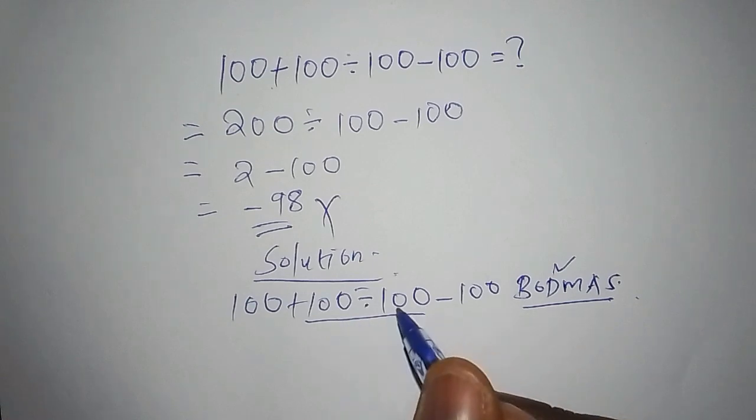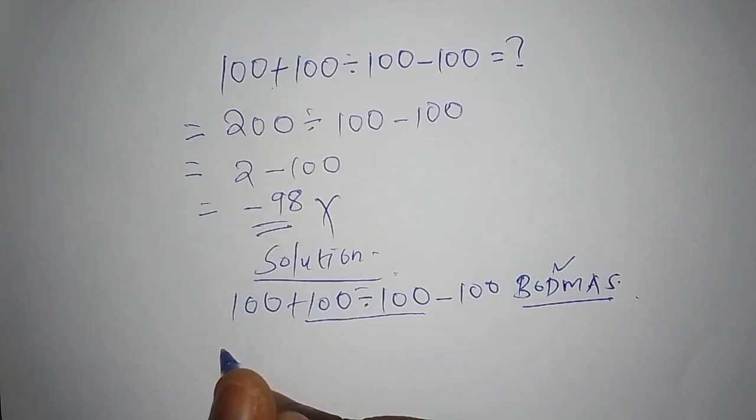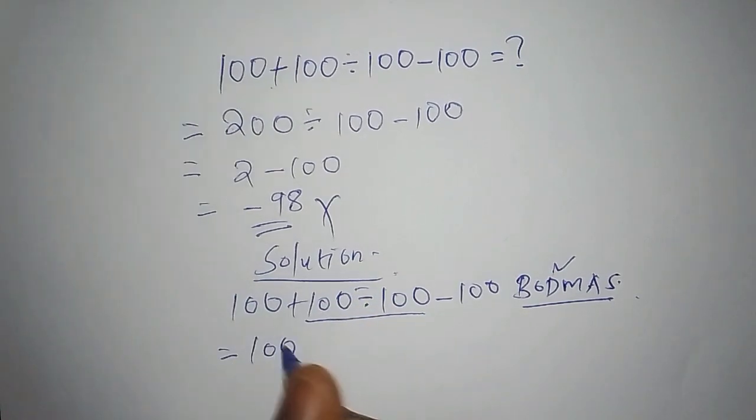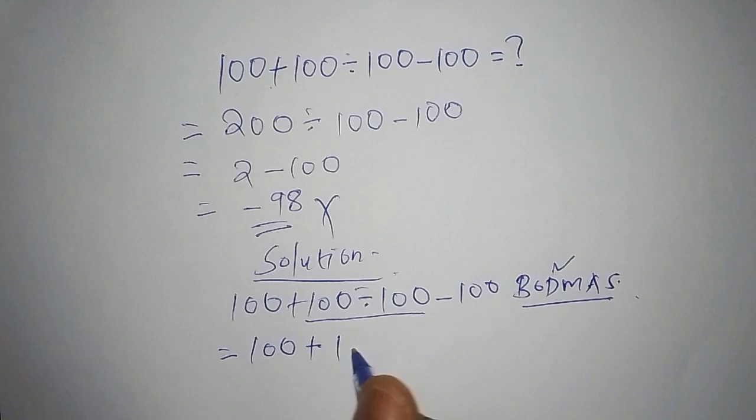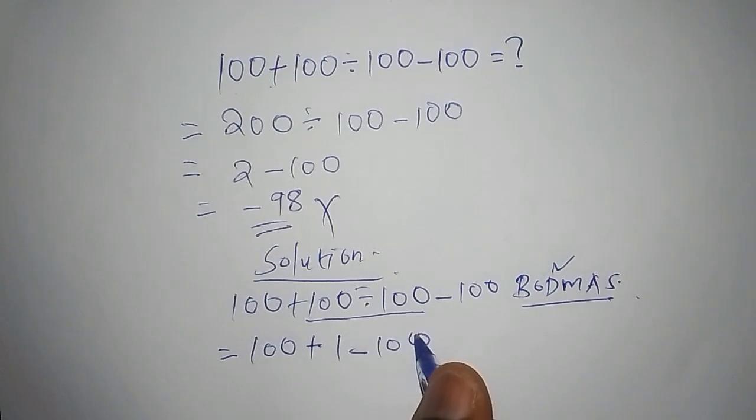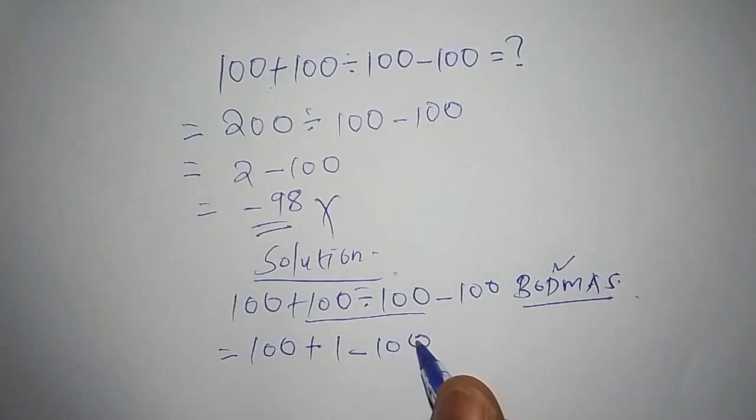So, we shall say that this one is equals to 100, add to 100, divide by 100, and 100 divide by 100 is 1, subtract from 100. Now, our next procedure...